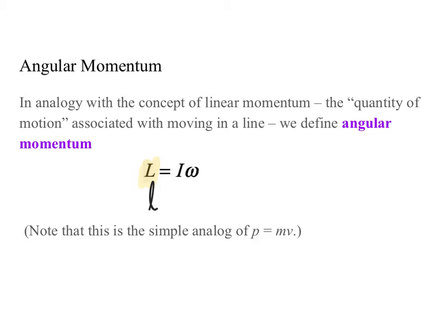So L equals I omega. What are the units going to be? The units of L will be the units of I, which is kilogram meter squared, times the units of omega, which are radians per second. So you can think of this as kilograms meters per second times meters.